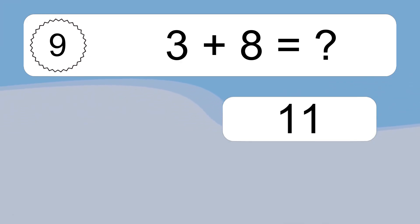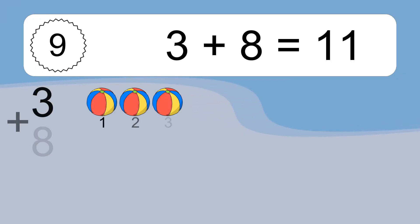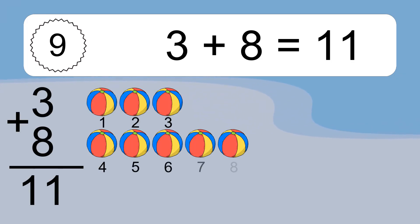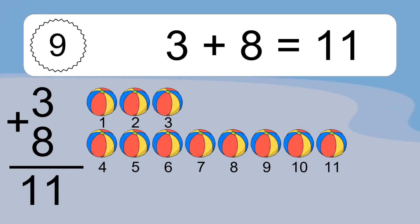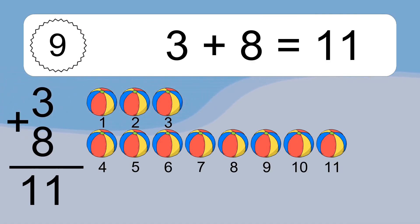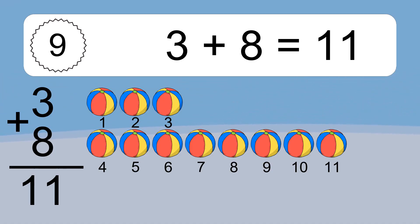3 plus 8 equals what? 3 plus 8 equals 11. Let's count it. 1, 2, 3, 4, 5, 6, 7, 8, 9, 10, 11.